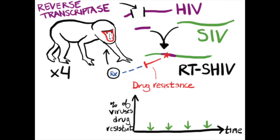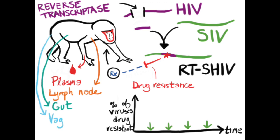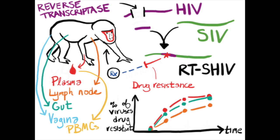To compare this process spatially, we also took SHIV samples from multiple locations in the body. There are samples from the blood plasma, but also from the lymph nodes, the gut, the vagina, and white blood cells, or PBMCs. And we can look at how drug resistance emerged in each of them.